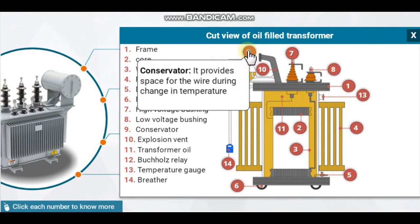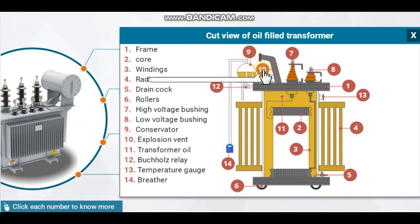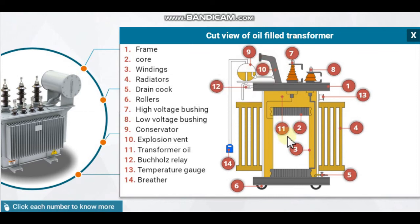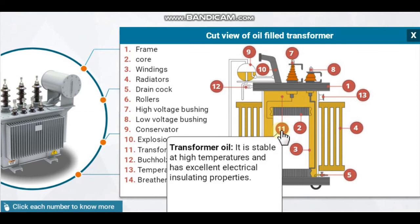Conservator: it provides space for the oil during change in temperature. Explosion vent: it is an emergency safety device to protect from high pressure inside the transformer. Transformer oil: it is stable at high temperatures and has excellent electrical insulating properties.